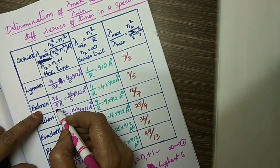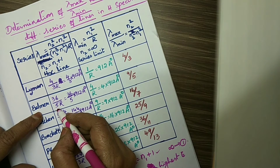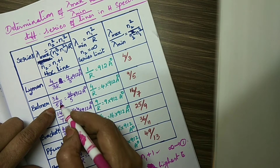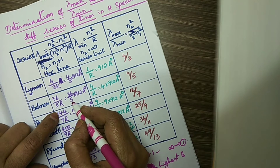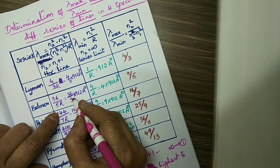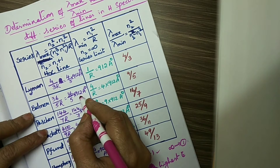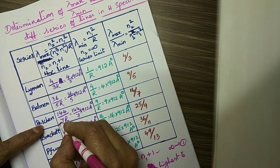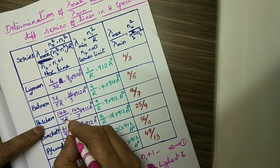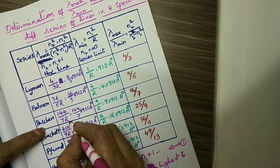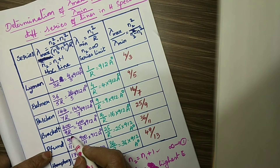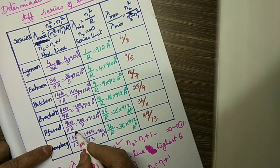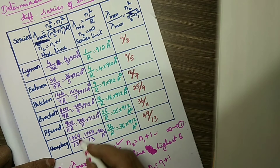For Balmer series, lambda max is 36/5R, where N1 is 2 and N2 is 3 — giving 36/5 into 912 angstrom units. For Paschen series, N1 is 3 and N2 is 4, giving 144/7R. For Brackett, 400/9R. For Pfund, 900/11R. And for Humphreys series, 1764/13R.